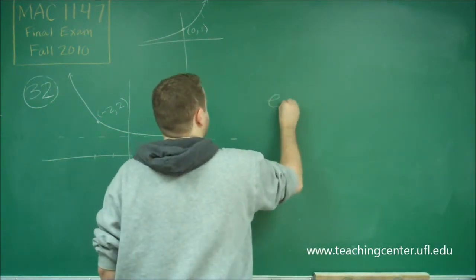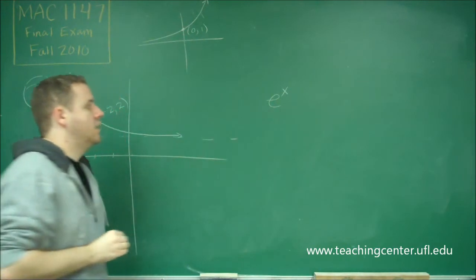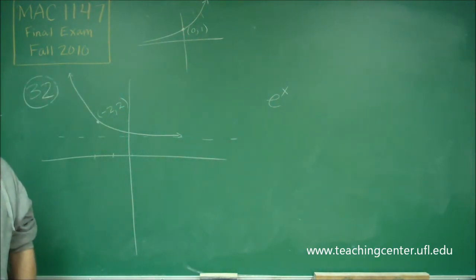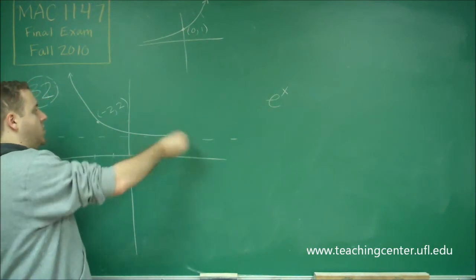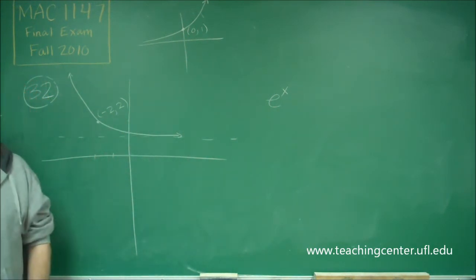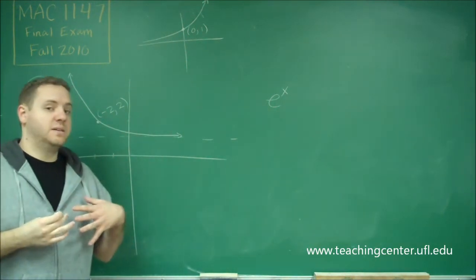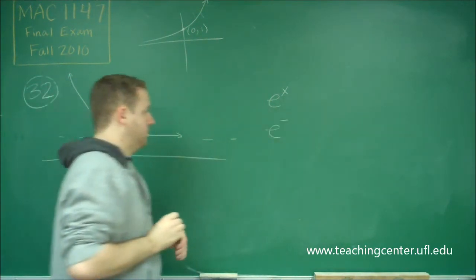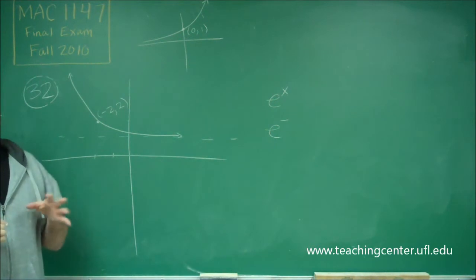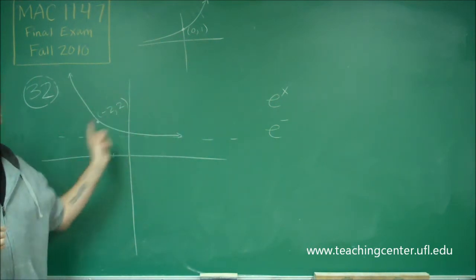So if we start with our standard e to the x function, remember that if you have any sort of reflection across the y-axis and a shift, that you have to factor out that negative sign. So we have the x term being negative because that's what a horizontal reflection does.